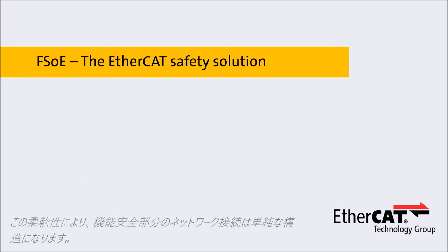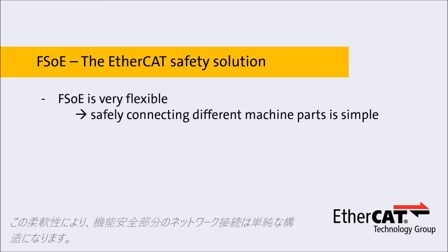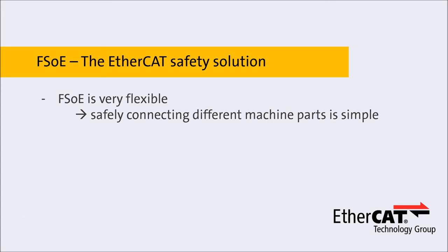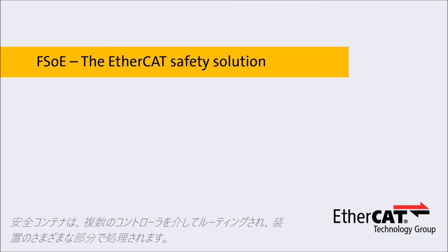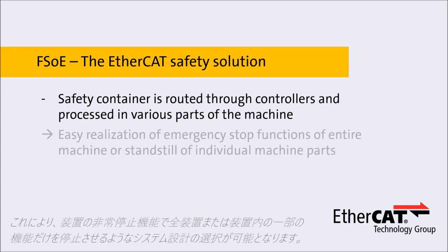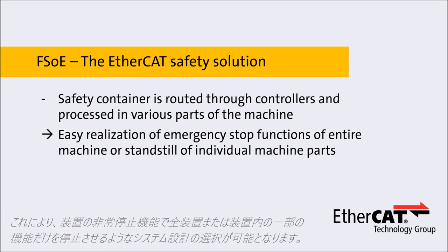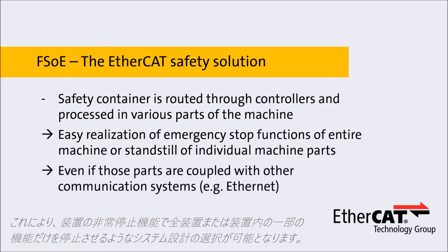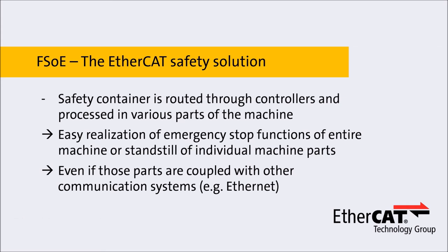Due to this flexibility, safely connecting different parts of the machine becomes much simpler. The safety container is routed through the different controllers and processed in the various parts of the machine. This makes emergency stop functions for an entire machine, or bringing targeted parts of the machine to a standstill, easily possible — even if the parts of the machine are coupled with other communication systems such as Ethernet.